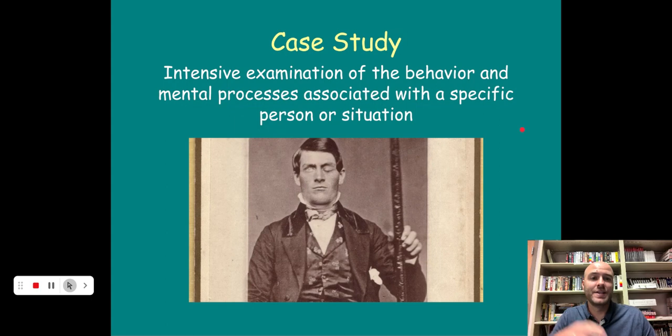Then we have case study. This is an intensive examination of the behavior and mental processes associated with a specific person, situation, or it can be a group of people. One of the most famous examples is this man right here, Phineas Gage. He was a railroad worker. He was tamping down some dynamite with this tamping rod right here when it set the dynamite off and it exploded and shot that tamping rod up through the bottom of his chin, out the top of his face and head. And it took a big old chunk of his frontal lobe of his brain out. Luckily, somehow, miraculously, he didn't die, but he lost a big chunk of his brain. And it was a great way for the psychological and scientific community to understand a little bit more about the brain. His personality changed, and his temperament changed, and suddenly people were realizing, I guess different parts of the brain are responsible for different things.